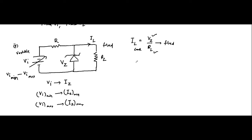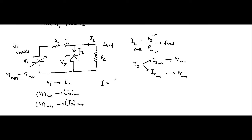The only thing changing is IZ, which fluctuates between IZ min and IZ max. IZ min occurs when input voltage is minimum; IZ max occurs when input voltage is maximum. And depending on that, the source current also keeps changing. The source current I equals IZ plus IL — so in one case it will be IZ min plus IL constant, and in another case it might be IZ max plus IL constant. This is the second case.